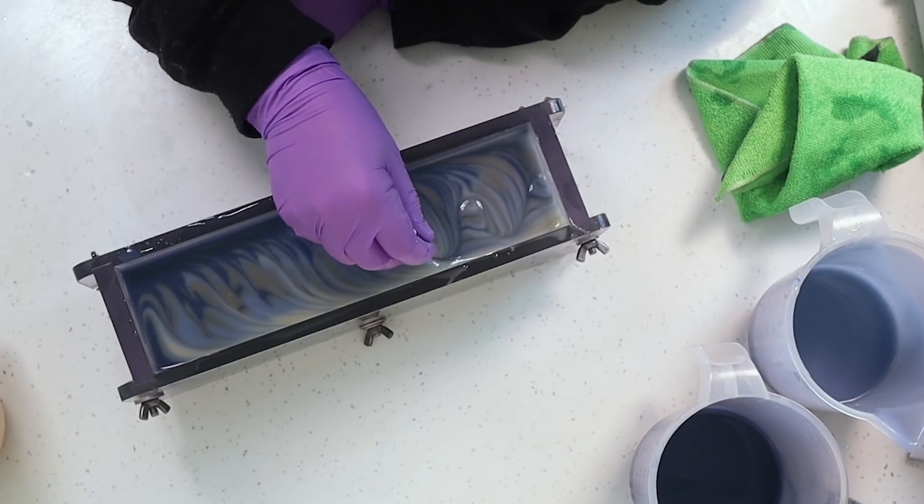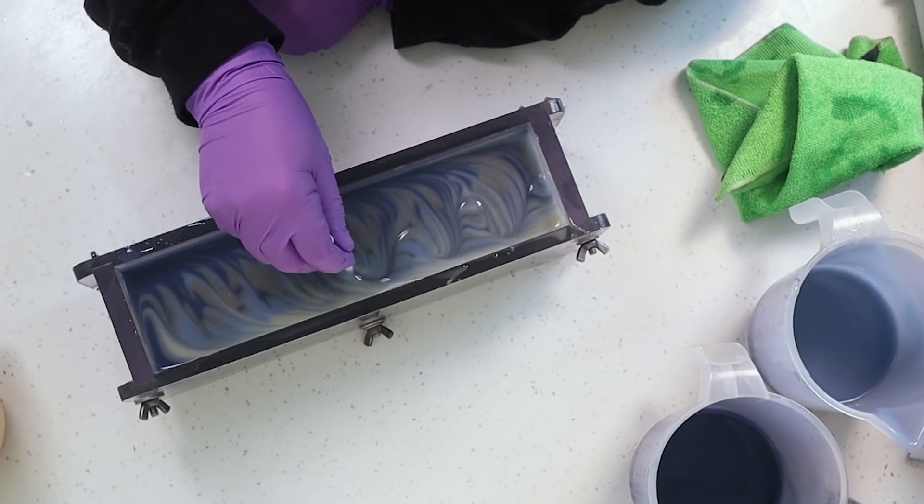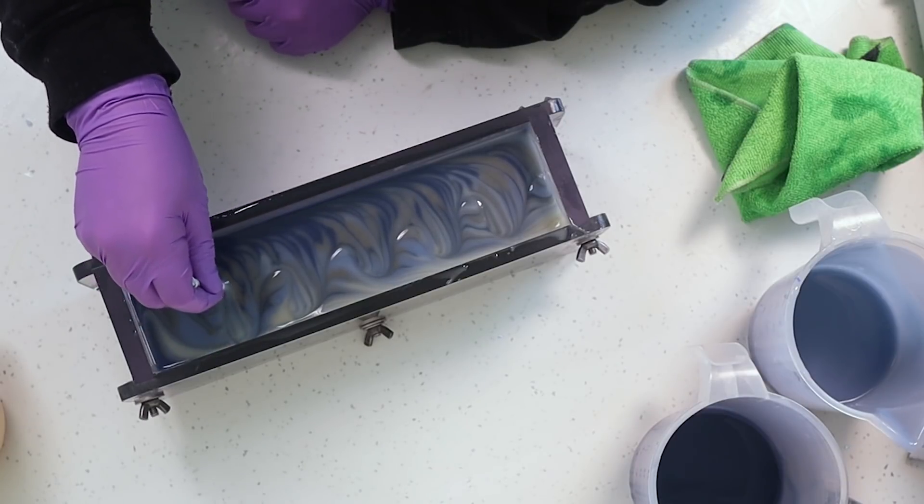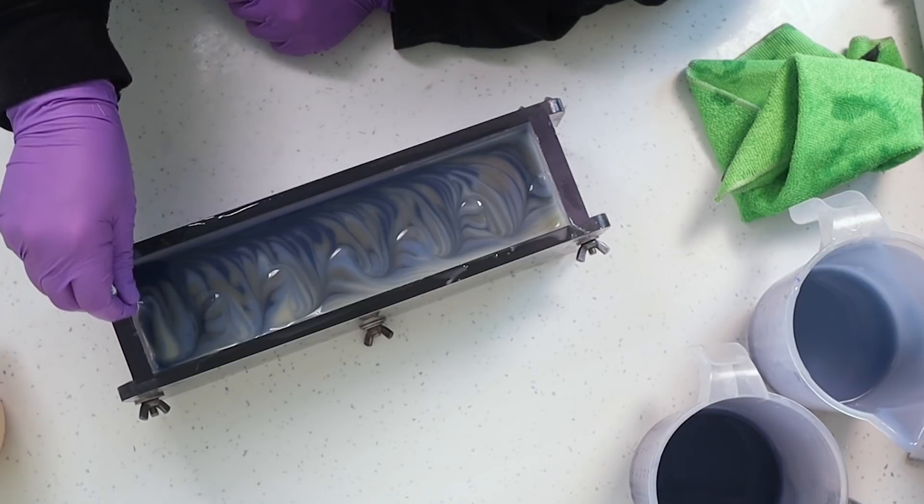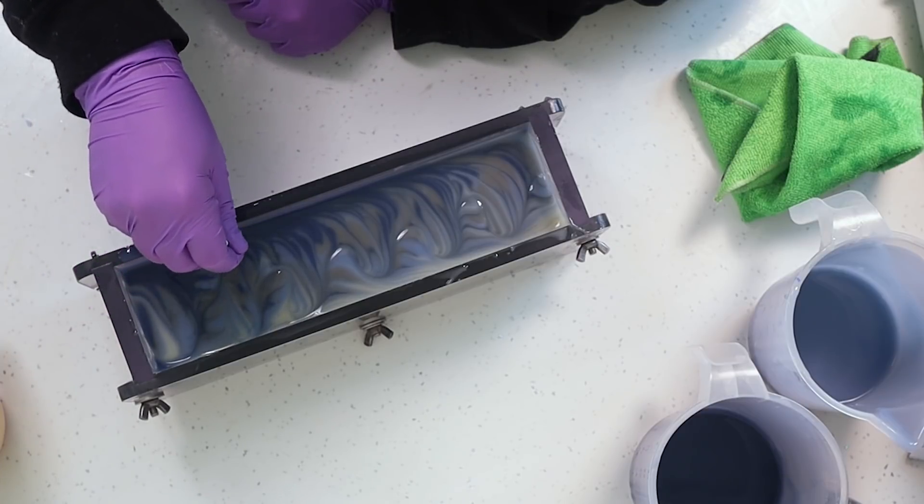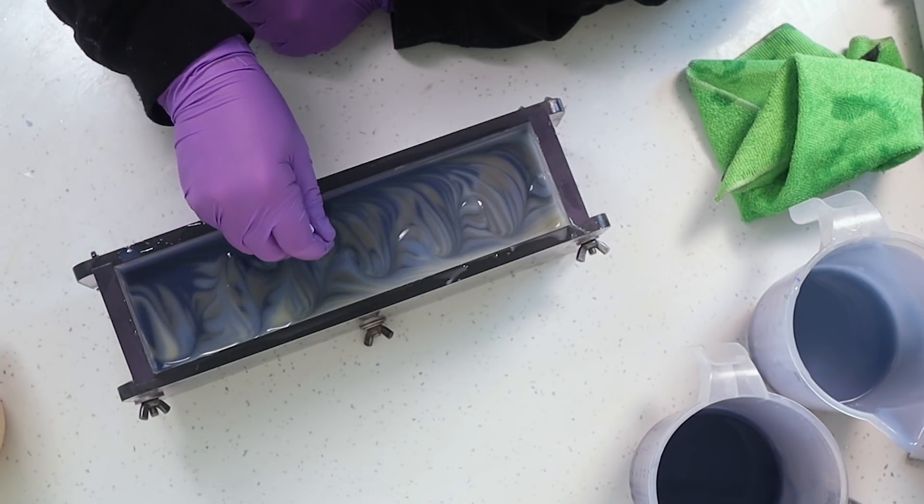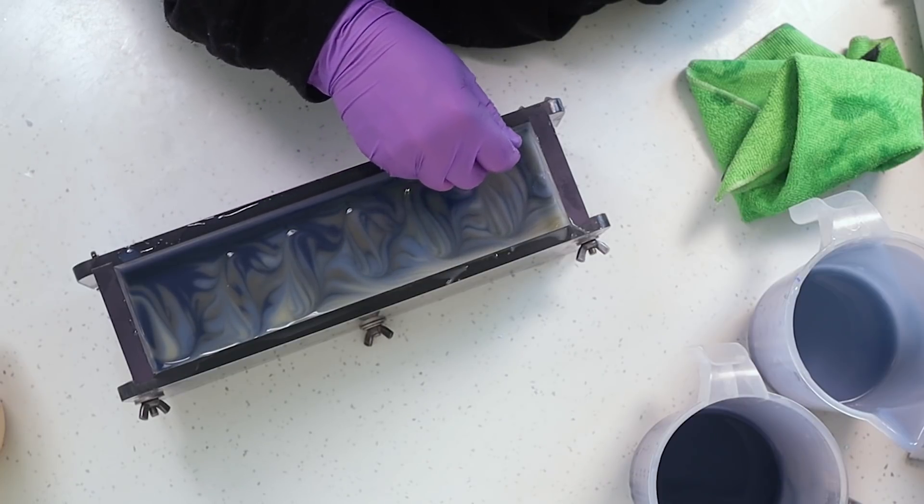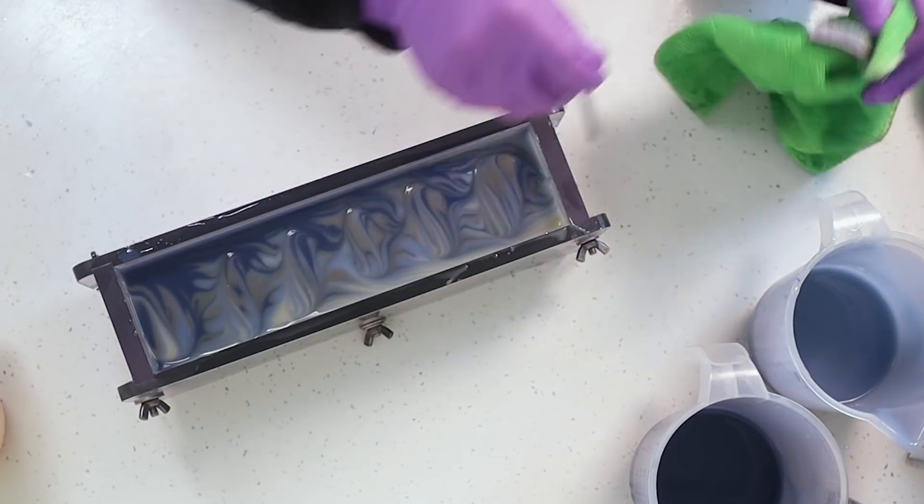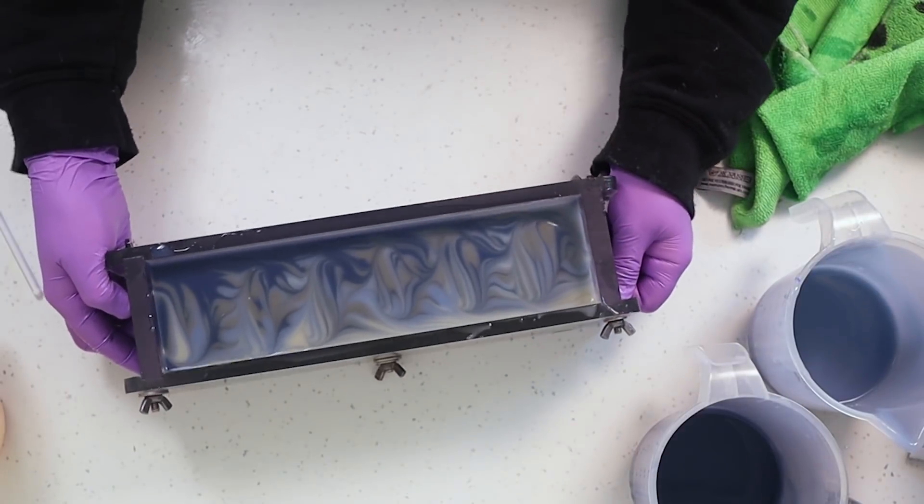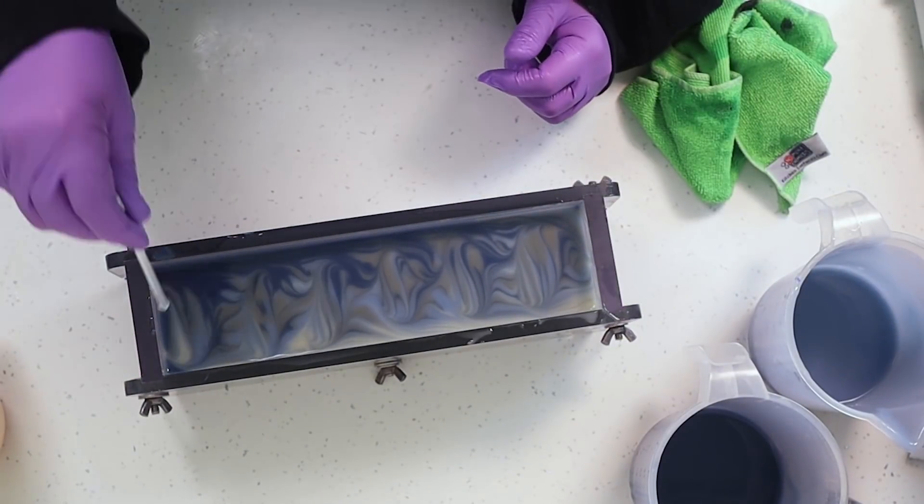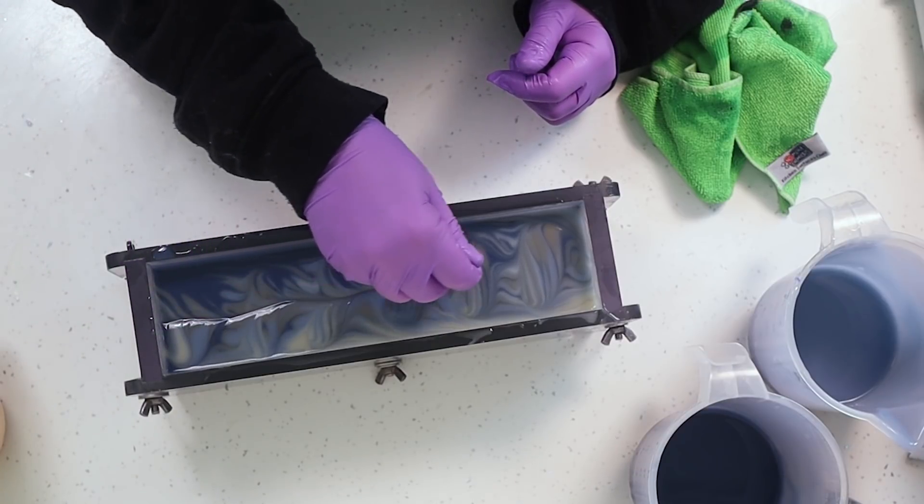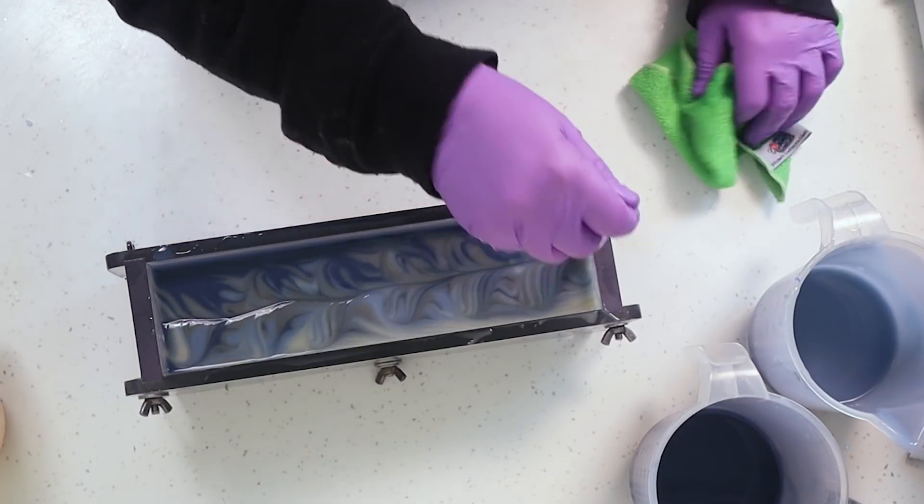And then once that's done I will as normal CPOP my soap and that is especially important when you're using natural colorants. CPOPing them, forcing that gel, does make those colorants come out a lot better than if you don't gel them or even stop them going through gel. So into my preheated oven 170 degrees Fahrenheit, 75 degrees Celsius, turn the oven off as the soap goes in and leave it there overnight.